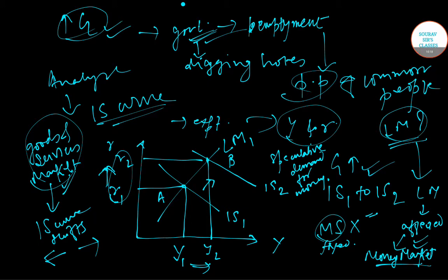The important thing to analyze here is the total change in the output level. At the R1 interest rate level and with the new IS curve, the output would have been Y3.